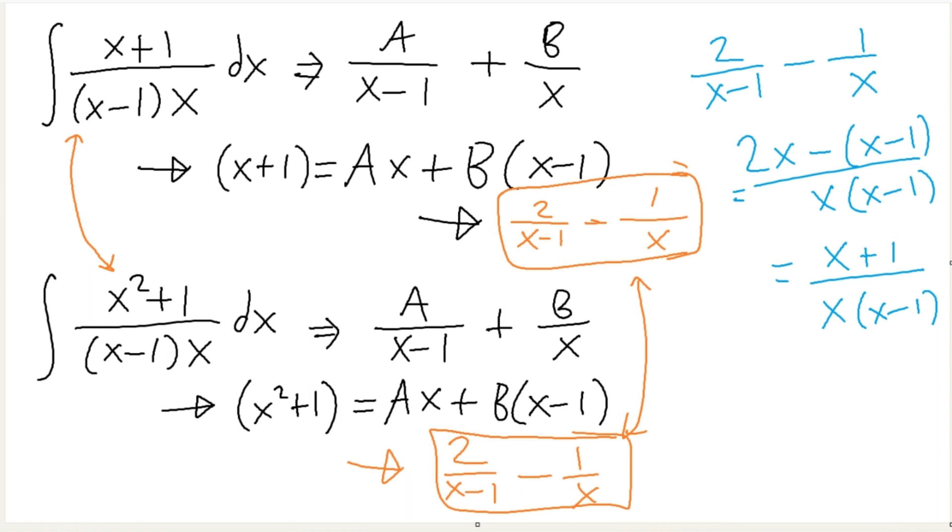Okay, so this is correct here, right? Which is, I mean, which makes sense because the degree in the top is smaller than the degree on the bottom. That's Heaviside. Here, what happened here? Why isn't this one true?